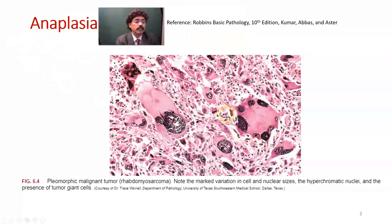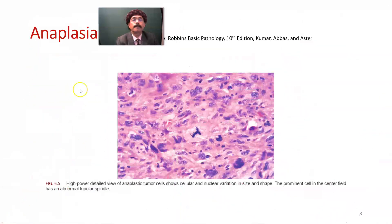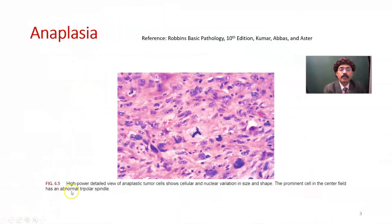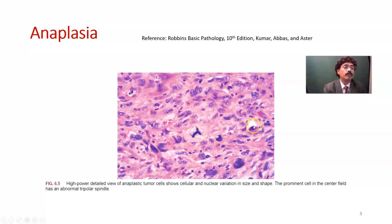We will get hyperchromatic, chromatin-rich nuclei, with variation in size and shape of the nucleus, and we will also see giant cells. Here is another image: a high-power detailed view of anaplastic tumour cells showing cellular and nuclear variation in size and shape — there is pleomorphism. The prominent cell in the central field has an abnormal tri-polar spindle. It shouldn't be tri-polar; it should be bipolar. But here we are seeing a tri-polar spindle, and we have abnormal mitotic figures — much more than the usual mitosis in the cell.